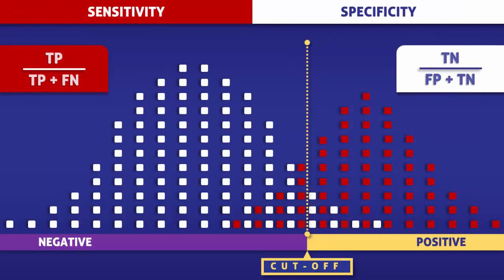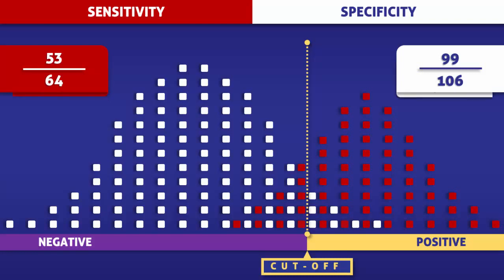Looking at the red squares, we see that 53 out of 64 are to the right of the yellow line. This means that 53 out of 64 people with the condition tested positive. Now looking at the white squares, we see that 99 out of 106 are to the left of the yellow line, meaning 99 out of 106 people without the disease tested negative. So at the current cutoff level, the sensitivity of the test is 83% and the specificity is 94%.